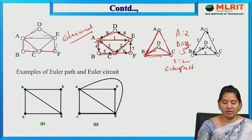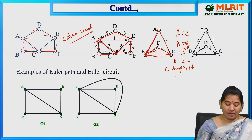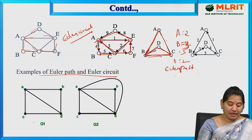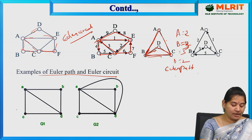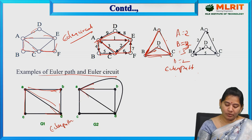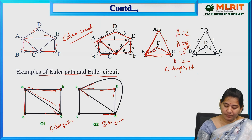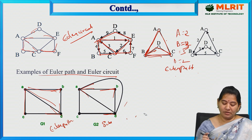Here are examples of Euler path and Euler circuit. For graph G1 with edges A to C, A to B, B to D, C to D: A and D have odd degree, B and C have even degree — this is an Euler path. By adding one more edge from A to D on the outside, all vertices (A=4, B=2, C=2, D=4) have even degree, making it an Euler circuit.